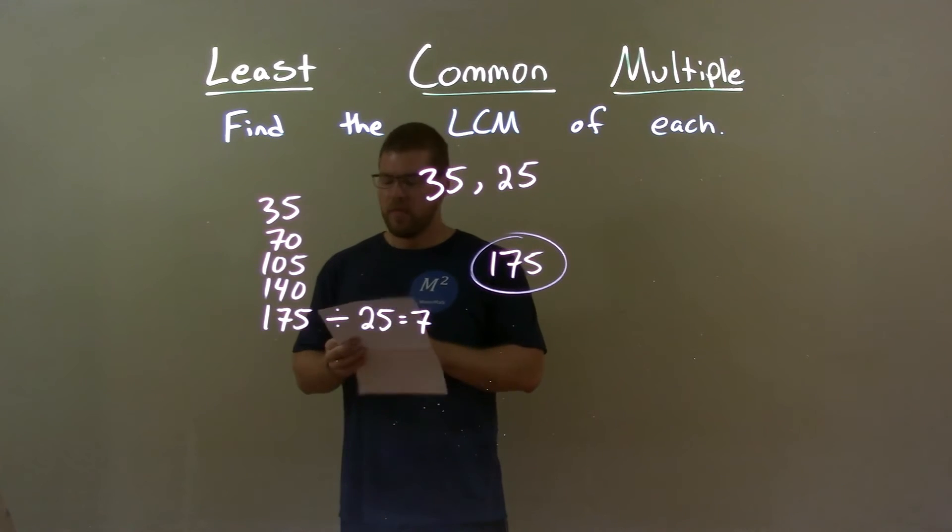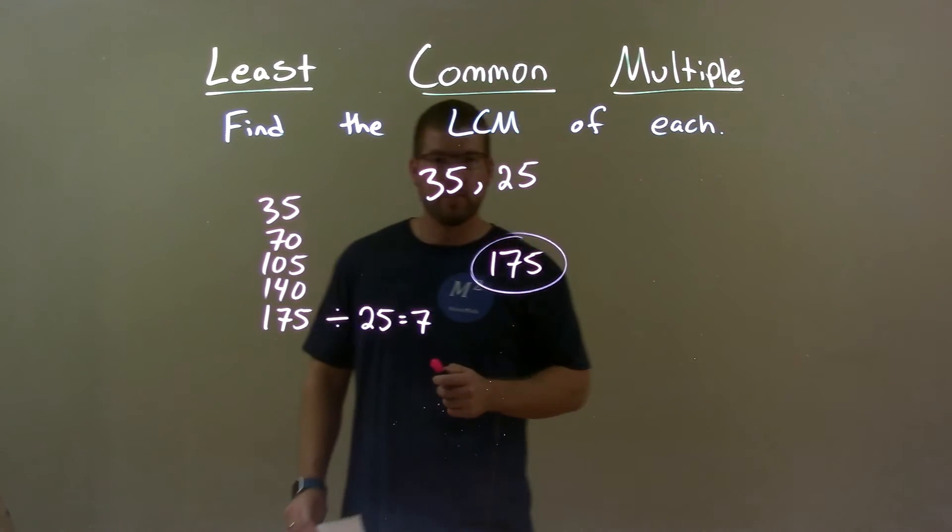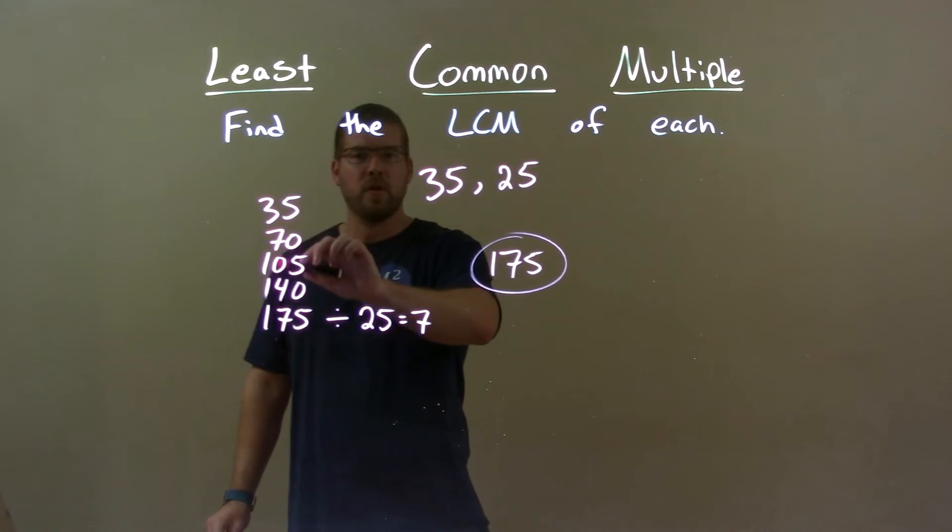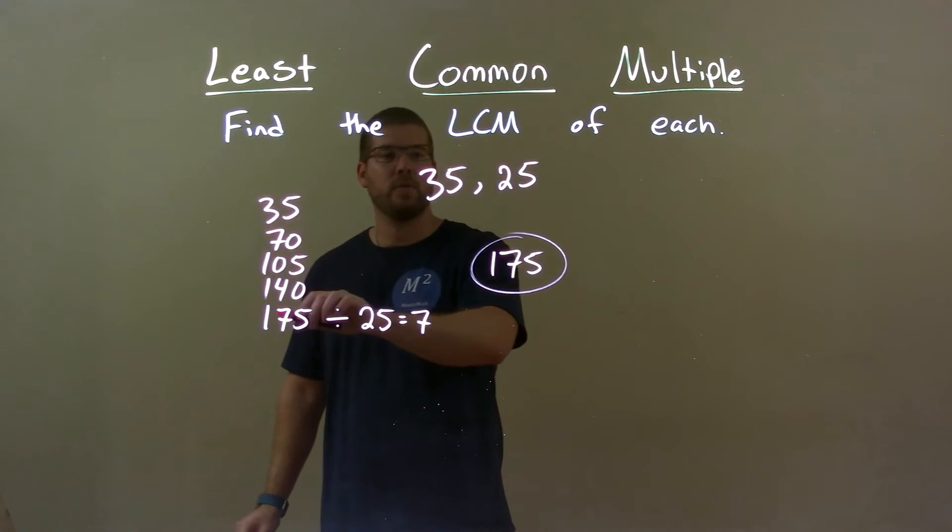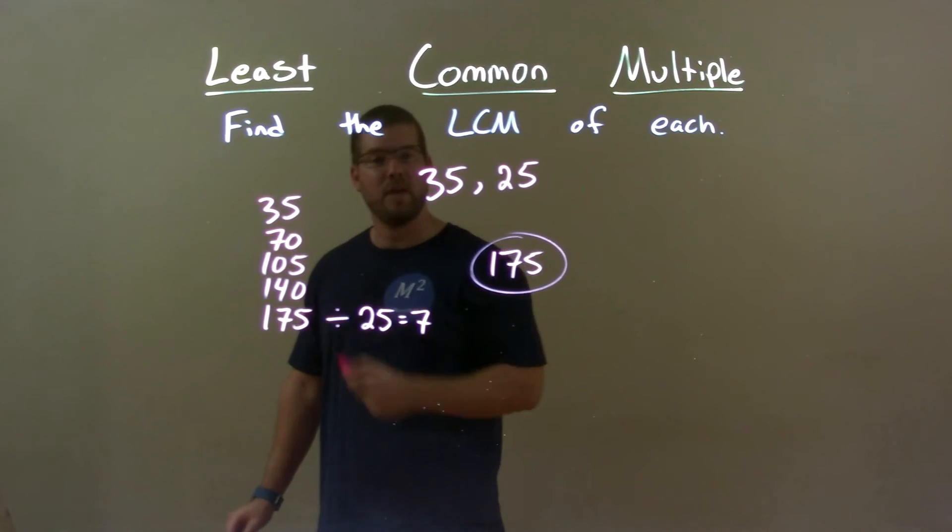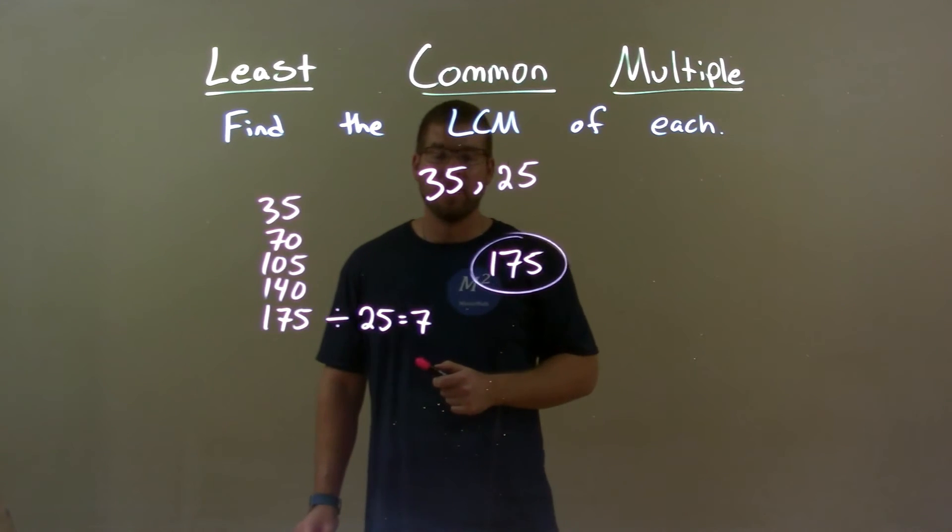Quick recap. We're given 35 and 25, and we have to find the least common multiple. I went through the multiples of 35, and the smallest one of those multiples that was divisible by 25 was 175. So, my final answer is 175.